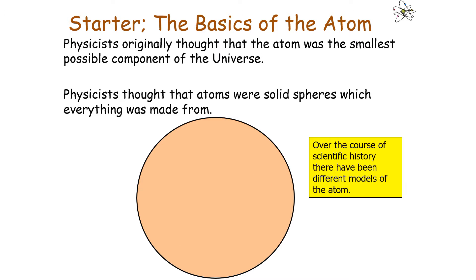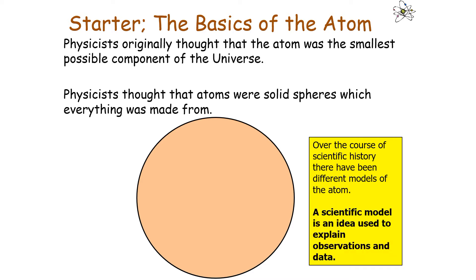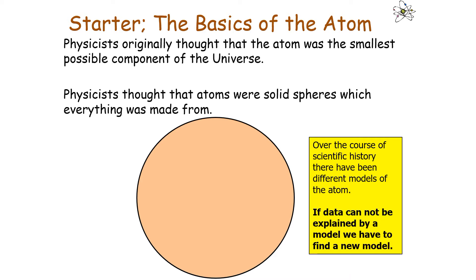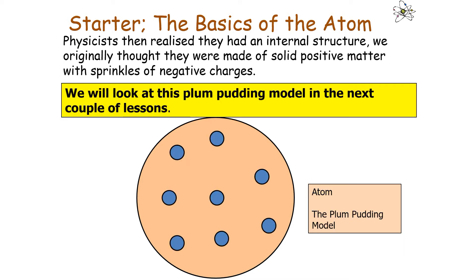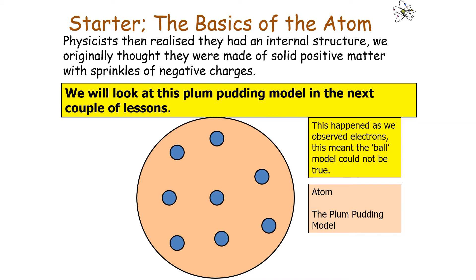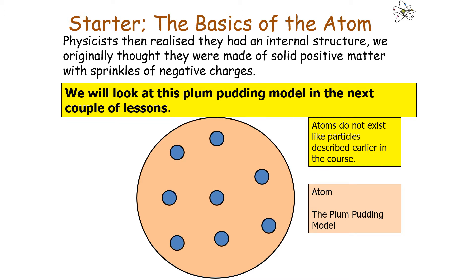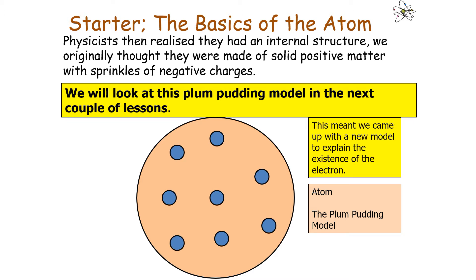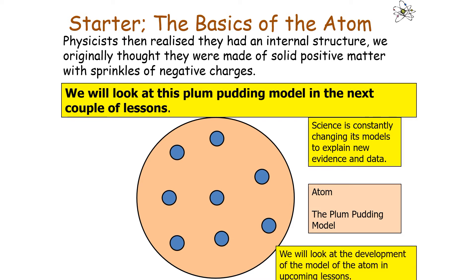Over the course of scientific history, there have been many different models of the atom. A scientific model is an idea used to explain observations and data. If data cannot be explained by a model, we have to find a new model. The experiments carried out in the 19th century implied the atom could not be the atomic model, so physicists came up with the plum pudding model as we observed electrons. It's important to note that science is constantly changing its models to explain new evidence and data.